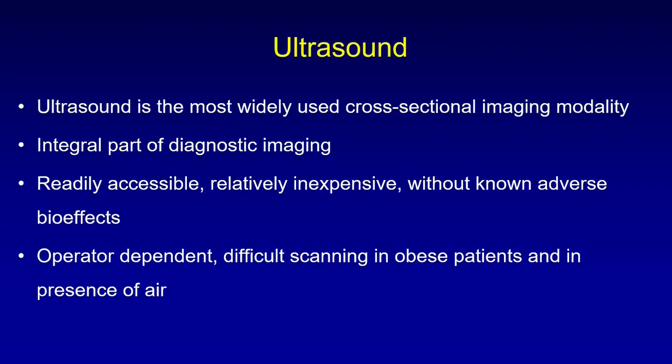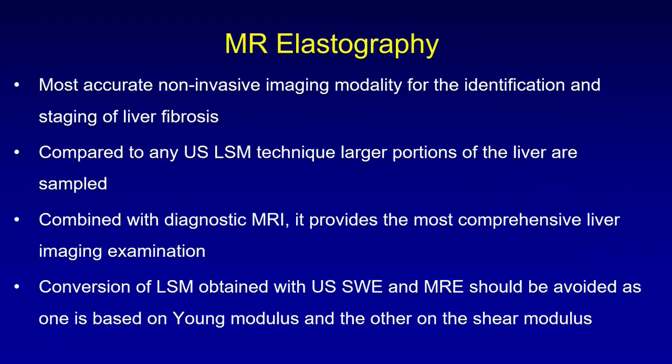Ultrasound is the most widely used cross-sectional imaging modality — integral to diagnostic imaging, readily accessible, relatively inexpensive, without any known adverse bio effects. Then why need another modality? Because there are still gaps: it is operator dependent, and there is difficult scanning in obese patients and in the presence of air. So MR elastography is mooted as the most accurate non-invasive imaging modality for identification and staging of liver fibrosis.